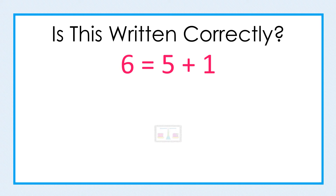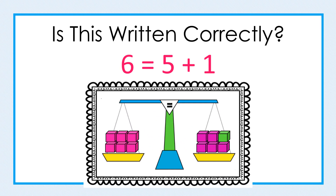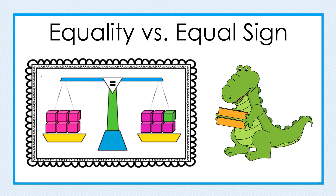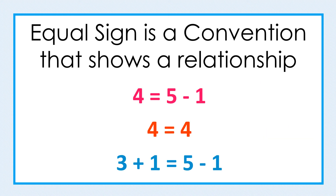On the other hand, when students were shown an image and asked if it is correct, students likely said yes. That is because it clearly shows that both amounts on the left and the right side are the same amount, or equal. It is not that students don't understand equality — rather, it's the use of the equal sign that causes confusion. The equal sign is simply a convention or a symbol that shows a relationship between the amounts to its left and to its right.